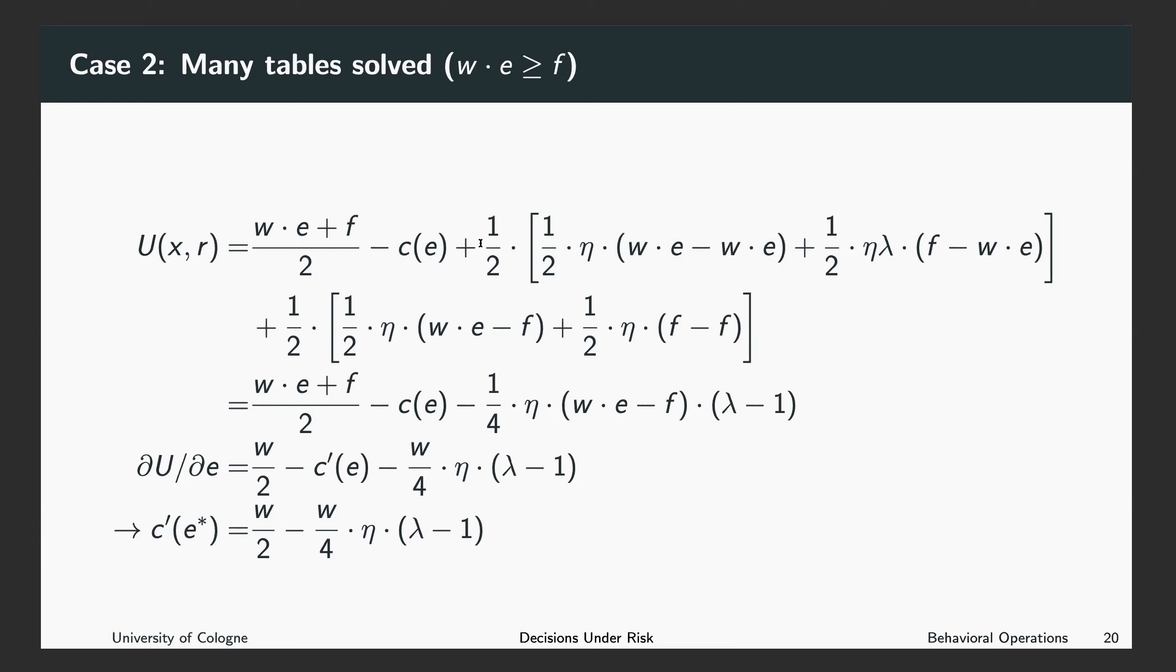Now, we will again start with the two reference points. We will first look at the case where you expected the piece rate to be the payoff. So the piece rate is here your reference point, which happens with 50% probability. If you expect the piece rate to be a reference point or to be a payment, then with probability one half, you will also receive the piece rate as a payoff. With also 50% probability, when you expected the piece rate to be paid out, you will get with 50% probability the fixed payment instead.